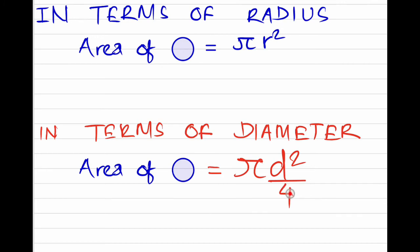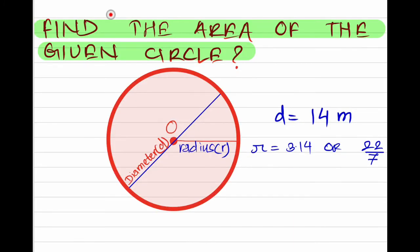Let's see an example. We are supposed to find the area of the given circle. The diameter is 14 meters, and π can be used as 3.14 or 22/7.